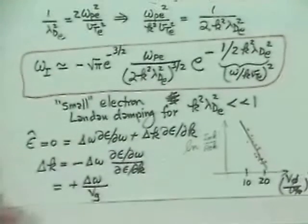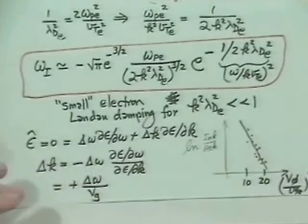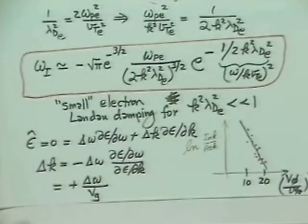Landau damping has been proven to be a very robust feature of collisionless plasmas. It is nominally a collisionless damping — you don't need collisions to get the phase mixing embodied in Landau damping. We'll break for a moment and come back to discuss some manifestations of this.